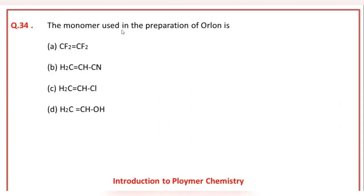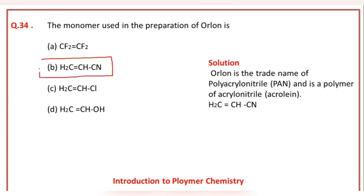The monomer used in the preparation of Arlon: the correct answer option of this question is B.